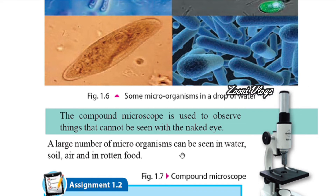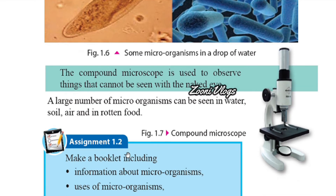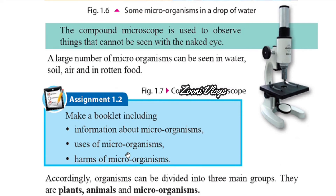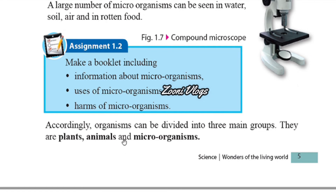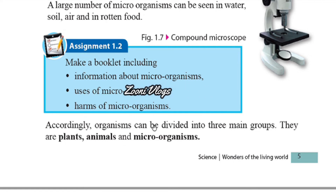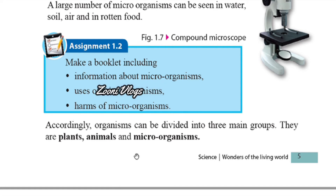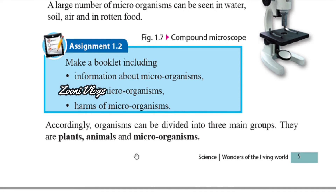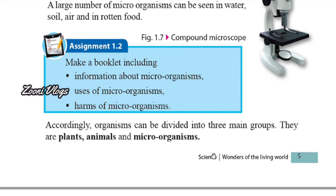Accordingly, organisms can be divided into three main groups: plants, animals, and microorganisms. So organisms can be divided into how many groups? Three groups — plants, animals, and microorganisms.